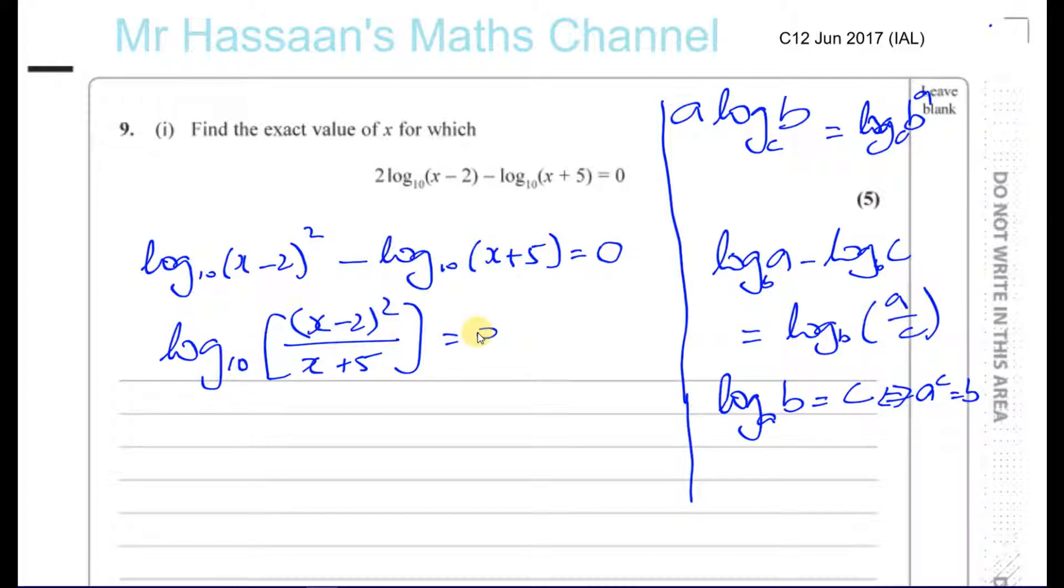So we can say 10 to the power of 0 is equal to all of this. We can say (x minus 2) squared divided by (x plus 5) is equal to 10 to the power of 0, and anything to the power of 0 is 1.